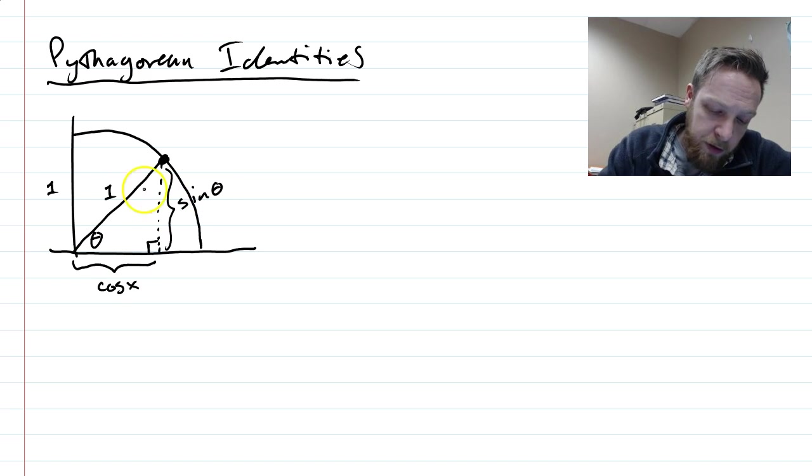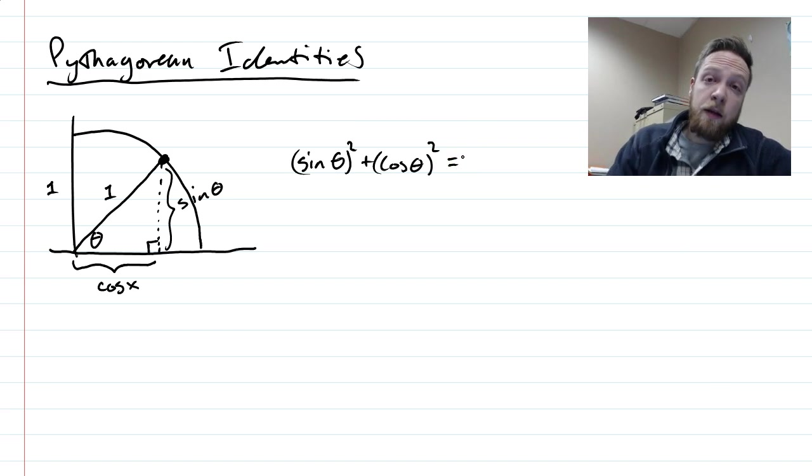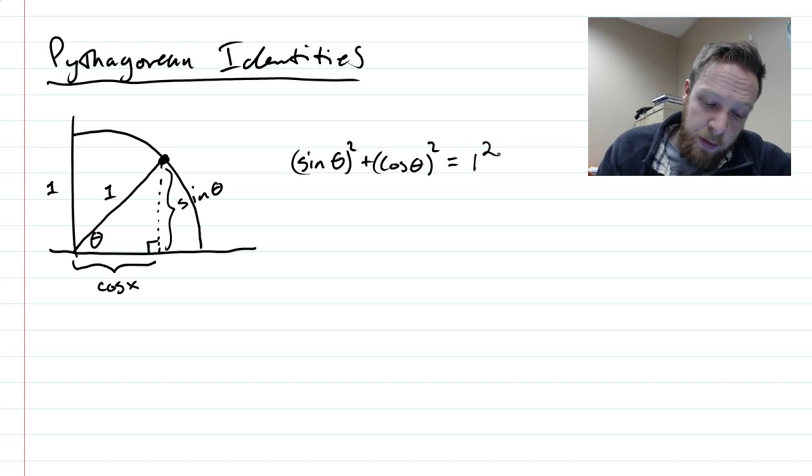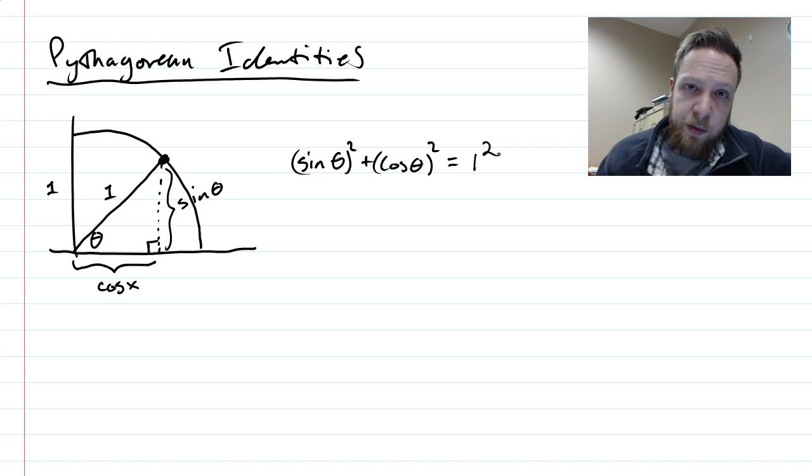Now if you look at that, we have a Pythagorean theorem going on there. It's a right triangle. So a² + b² = c². You square the legs, and their sum should be the hypotenuse squared. So what this means is no matter what θ I give you, if you do sin² θ + cos² θ, it will always be 1. And this happens all the time.